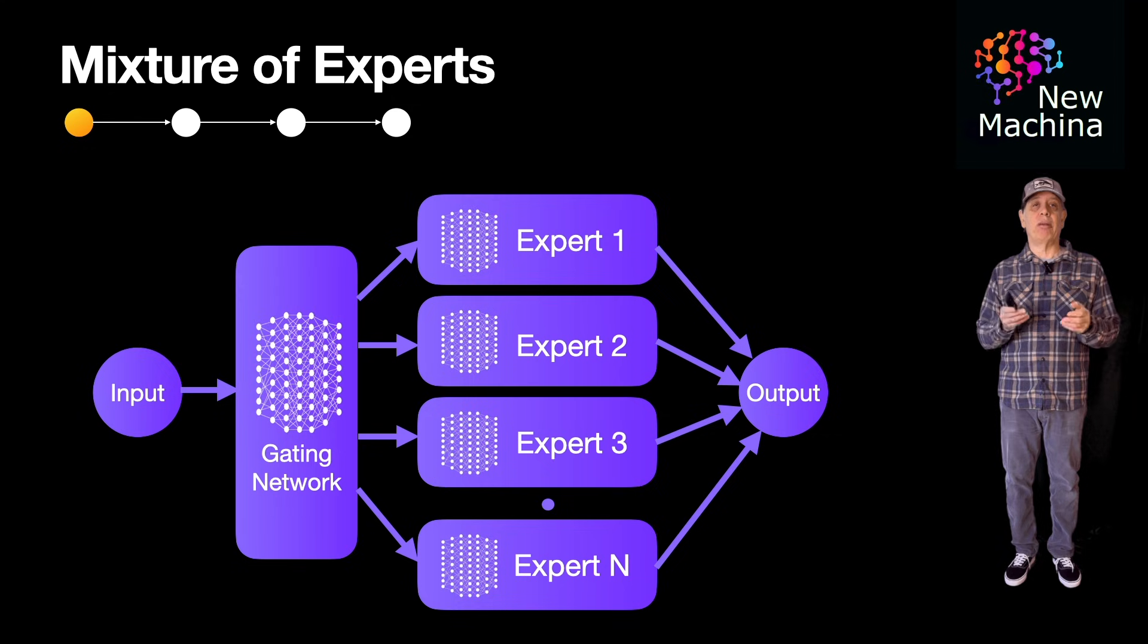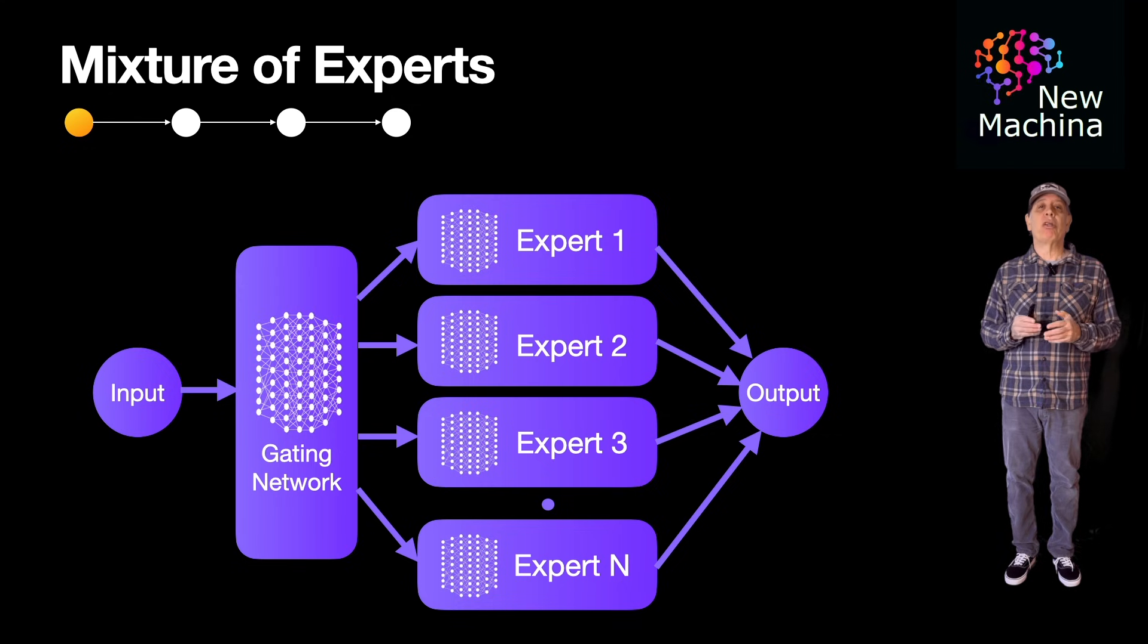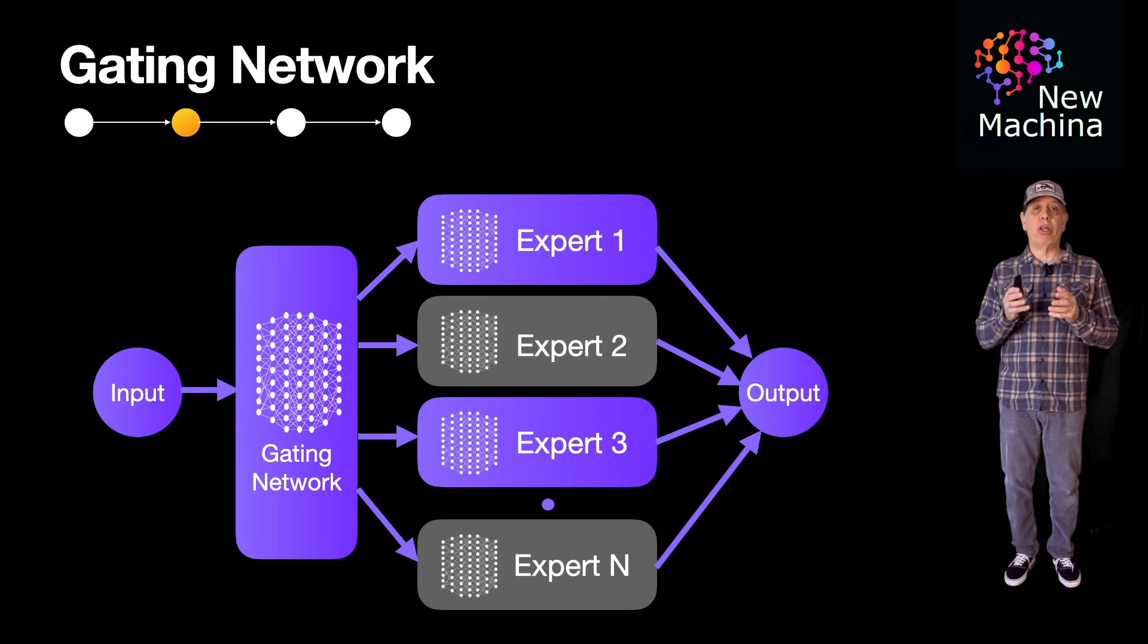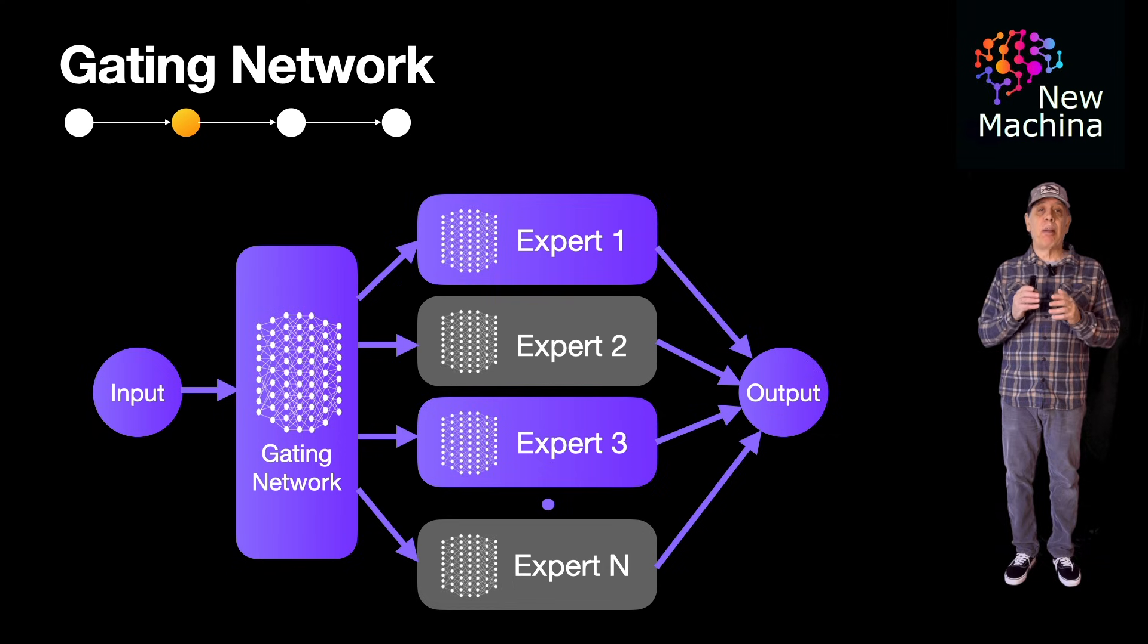How are experts selected? A gating network determines which experts, out of all the experts available, are to be activated for each input. Only a subset of the experts are active during each forward pass, making it computationally efficient.